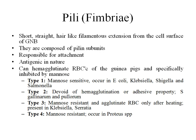Pili are also antigenic in nature. Some pili can agglutinate the RBCs of guinea pigs and are specifically inhibited by mannose — this is called mannose-sensitive. Mannose-sensitive means when we add mannose, it binds to the pili, thereby inhibiting the agglutination of RBCs. Mannose-resistant means that when we add mannose, it does not bind to the pili and agglutination is not inhibited.